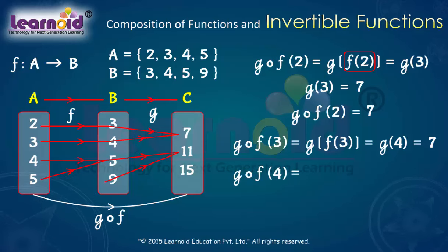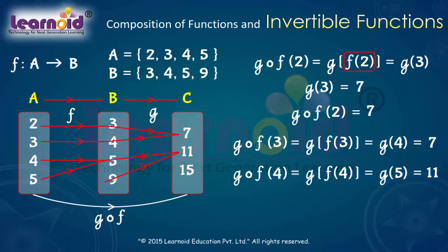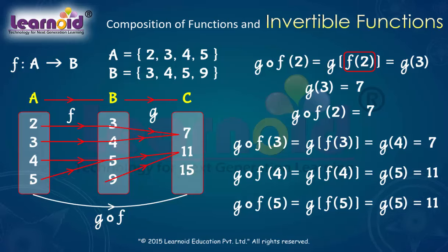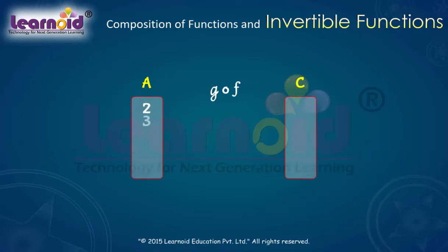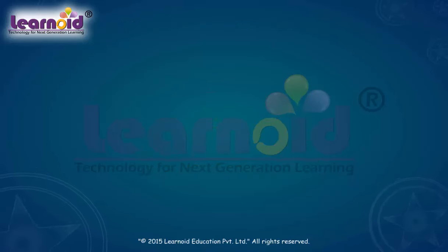gof(4) = g(f(4)). Since f(4) = 5 and g(5) = 11, so gof(4) = 11. Similarly, gof(5) = g(f(5)) = g(5) = 11, so gof(5) = 11.